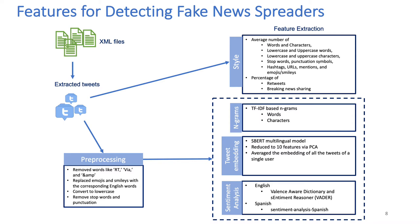The second group of features includes TF-IDF n-grams for both words and characters. We concatenate all tweets by each user to form a single document per user. Then for each document, we remove reserved words like RT, FAV, and so on and replace the emojis and smileys with corresponding English words. Each document was then converted to lowercase and stop words and punctuation symbols were removed using NLTK. Finally, we computed the TF-IDF vector representation for both word and character n-grams. We experimented with different parameters including the number of terms and the length of grams from unigrams to trigrams, and we obtained the best result for both character and word with unigrams.